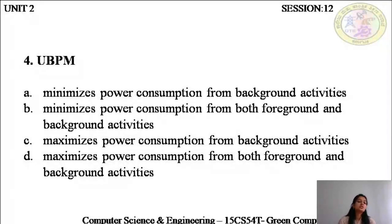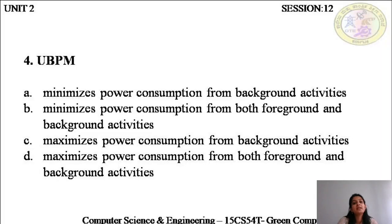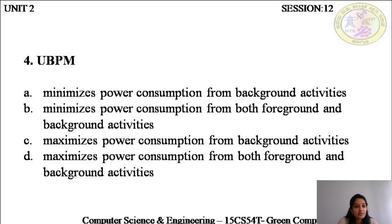UBPM: to achieve idle efficiency, background activities need to be kept at a minimum. Windows operating system provides UBPM — Unified Background Process Manager — which ensures that the power consumed by background processes is maintained and kept to a minimum. It minimizes the power consumption from background activities only, not from foreground. So B and D are wrong. It does not have anything to do with foreground activities. It does not maximize power consumption — it only minimizes power consumption from background activities to ensure idle efficiency is at the highest.